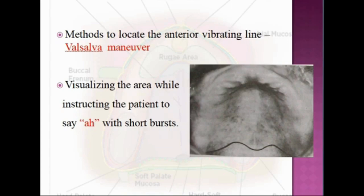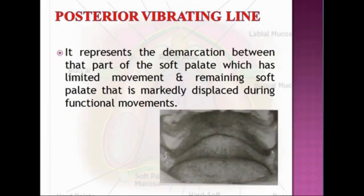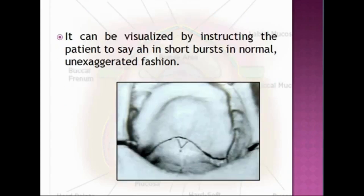The Valsalva maneuver is performed by asking the patient to blow through the nose while closing the nostrils. The posterior vibrating line is recorded by instructing the patient to say 'ah' in a short, normal unexaggerated manner. The posterior vibrating line is an imaginary line at the junction of the aponeurosis of the tensor veli palatini muscle and the muscular portion of the soft palate.